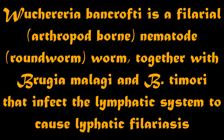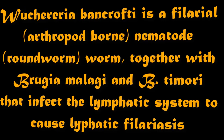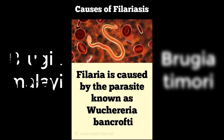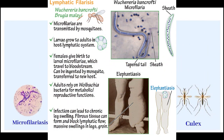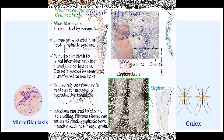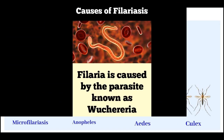Wuchereria bancrofti is a filarial, arthropod-borne nematode (roundworm) that is the major cause of lymphatic filariasis. It is one of three parasitic worms, together with Brugia malayi and B. timori, that infect the lymphatic system to cause lymphatic filariasis. These filarial worms are spread by a variety of mosquito vector species.